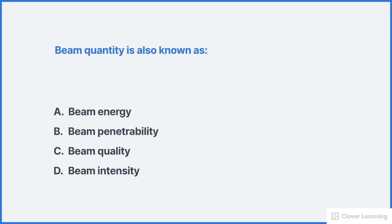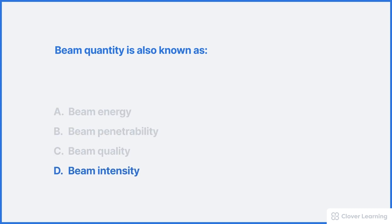Let's look at a quick question to check our understanding. The quantity is also known as which of these answer options? The correct answer is beam intensity. Remember that quantity strictly refers to the total number of x-rays in the x-ray beam, and another word for quantity is intensity.